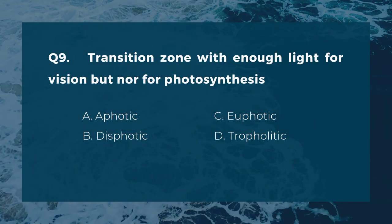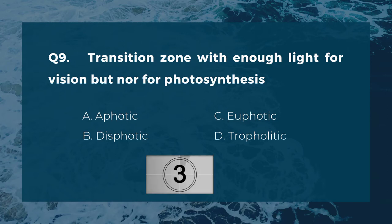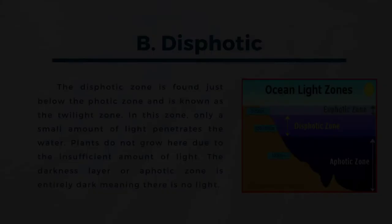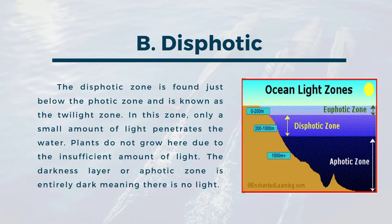Question nine: transition zone with enough light for vision but not for photosynthesis. A) aphotic, B) dysphotic, C) euphotic, D) tropholitic. The correct answer is B, dysphotic. The dysphotic zone is found just below the photic zone and is known as the twilight zone. In this zone, only a small amount of light penetrates the water; plants do not grow here due to the insufficient amount of light. The aphotic zone is entirely dark, meaning there is no light.